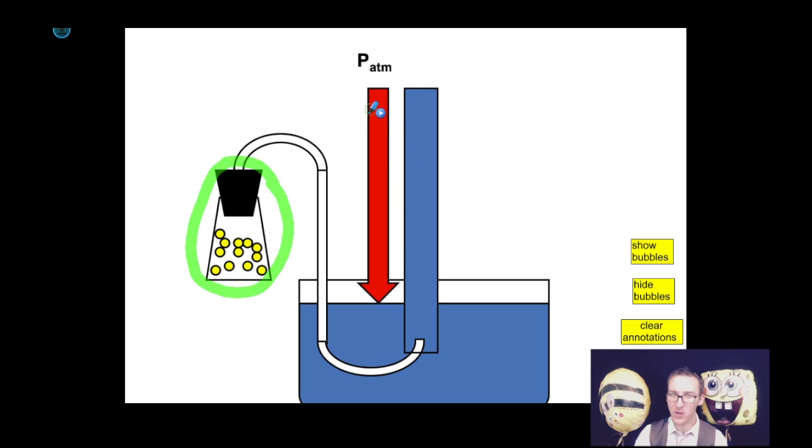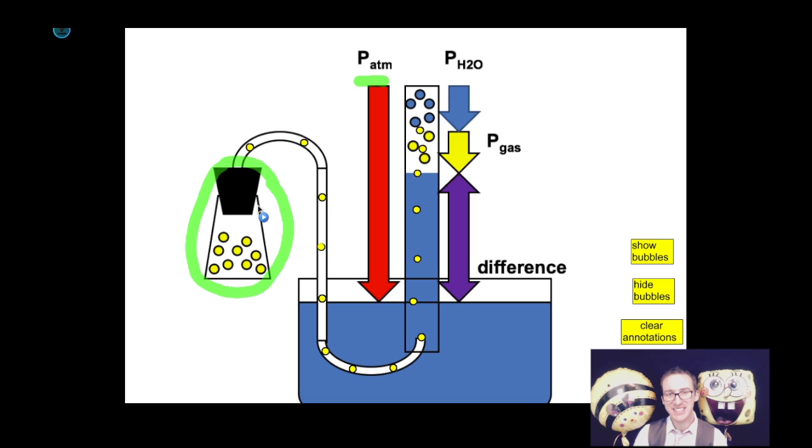This red arrow here is representing my atmospheric pressure. So as the reaction proceeds, gas is going to bubble up through this tubing and into my collection bottle. As I continue to collect that gas, the gas is going to displace the water.